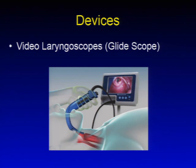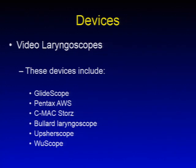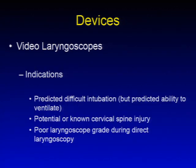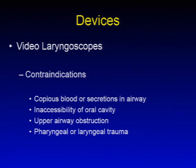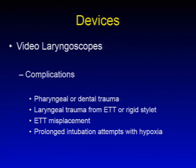Next, video laryngoscopes, such as the GlideScope. Other devices include the Pentax AWS, C-MAC, Bullard laryngoscope, Upshur scope, or Wu scope. Indications include predicted difficult intubation with predicted ability to ventilate, potential or known cervical spine injury, or poor laryngoscopy grade during direct laryngoscopy. Contraindications include copious blood or secretions, inaccessibility of the oral cavity, upper airway obstruction, or pharyngeal/laryngeal trauma. Complications include pharyngeal or dental trauma, laryngeal trauma from the endotracheal tube or rigid stylet, ETT misplacement, or prolonged intubation attempts with hypoxia.